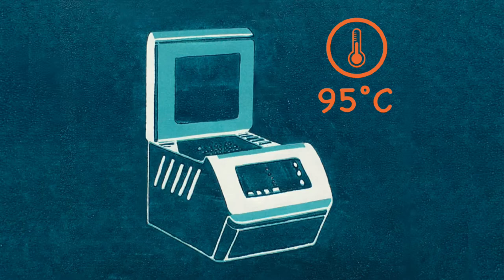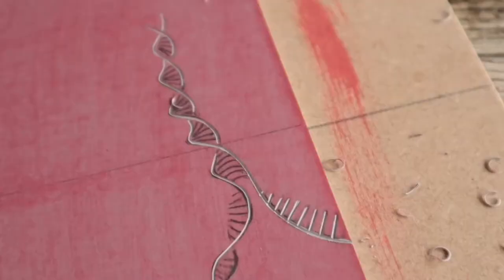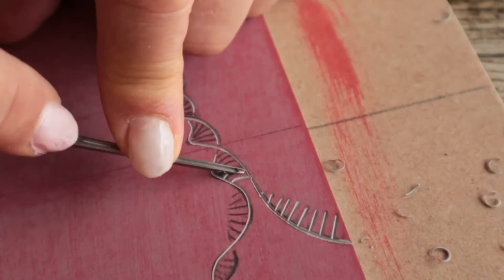In the second stage, the primers we added find only the coronavirus DNA and stick to it. The primers are very specific and will only find the coronavirus DNA. This is carried out at a temperature of about 50 degrees.